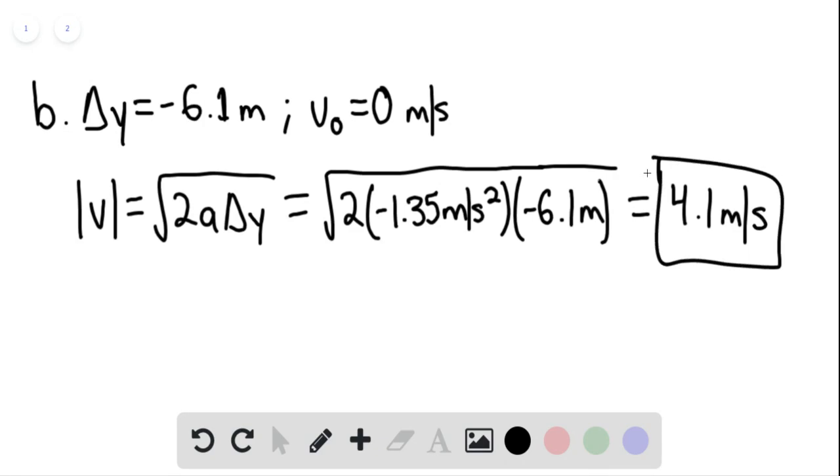For downward acceleration greater than 1.4 meters per second squared approximately, the speeds at impact will be larger than approximately 4.1 meters per second. That is the end of the solution. Thank you for watching.